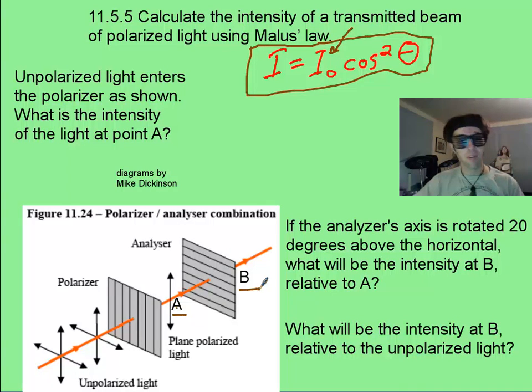Now the first part, saying what's the intensity at A, that should be easy. That is going to be 50%, because it's always going to be cut in half, no matter what the orientation of the polarizer is, if you have unpolarized light, which we do. Now, see if you can solve the next two parts.